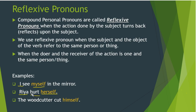'Ria hurt herself' — Ria hurt herself. Next sentence: 'The woodcutter cut himself.' The action is 'cut', the woodcutter did it and received it — both subject and object are the same person. So 'himself' is a reflexive pronoun. In these three sentences, the subject and object are referring to one person.